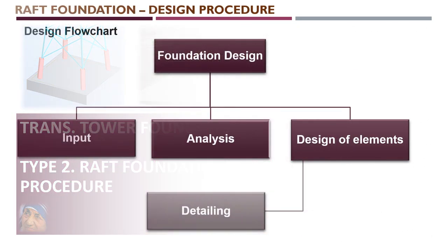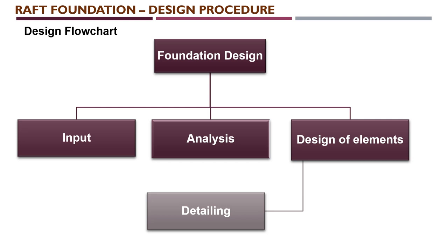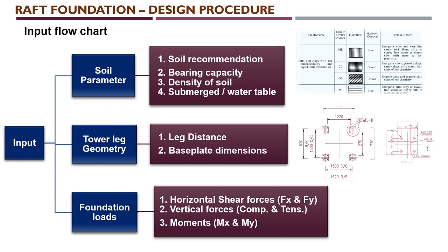The design procedure uses a design flowchart comprising three major parameters in terms of design calculations and finally detailing. The inputs fall into three major categories: soil parameters, to be referred from geotechnical information; tower leg geometry, from the structure model or drawings; and foundation loads, from the structure design calculations. The soil parameters include soil recommendation, bearing capacity, density of soil, and submerged or water table information.